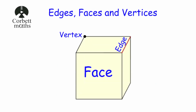So in this video we've looked at what edges, faces, and vertices are. Faces are individual surfaces of a three-dimensional shape. Vertices are the corners, and one of them is called a vertex. Edges are the lines joining those vertices. I hope you found this video useful. If you have, please like it and subscribe to the YouTube channel. Thank you. Bye.